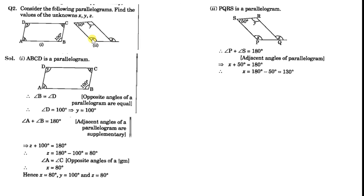So here, suppose let us name this quadrilateral as PQRS. Now, angle P and angle S, they are forming adjacent angles of a parallelogram. So their sum is 180 degrees.